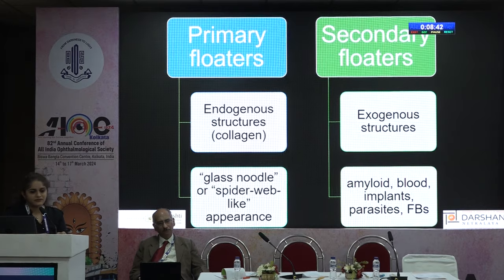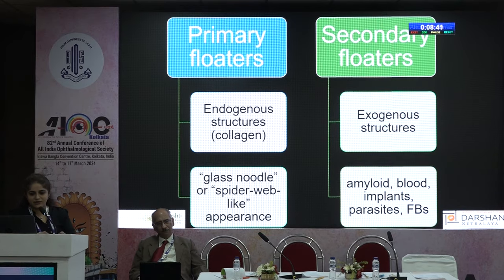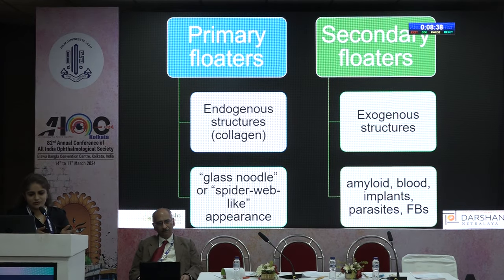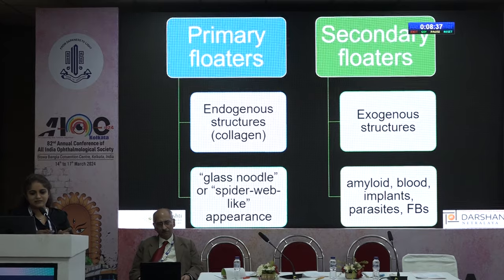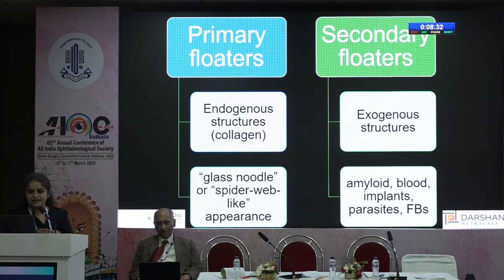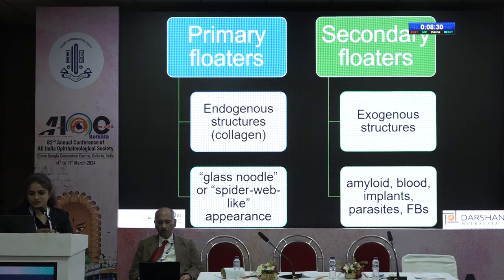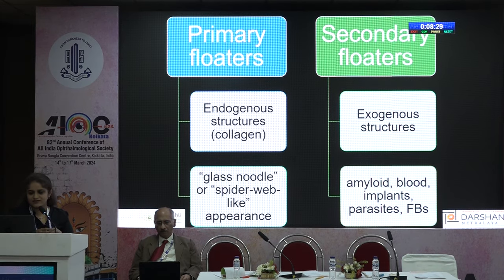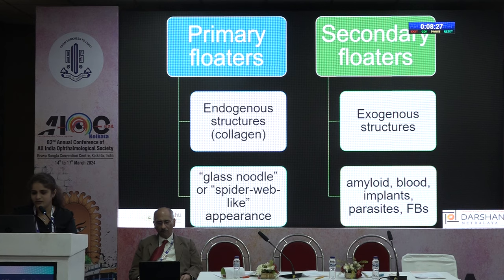Primary floaters are due to endogenous vitreous structures — collagen — and the patient classically complains of glass noodle or spider web-like appearance. Secondary floaters are due to exogenous structures in the vitreous such as amyloid, blood, implants, parasites, or foreign bodies.